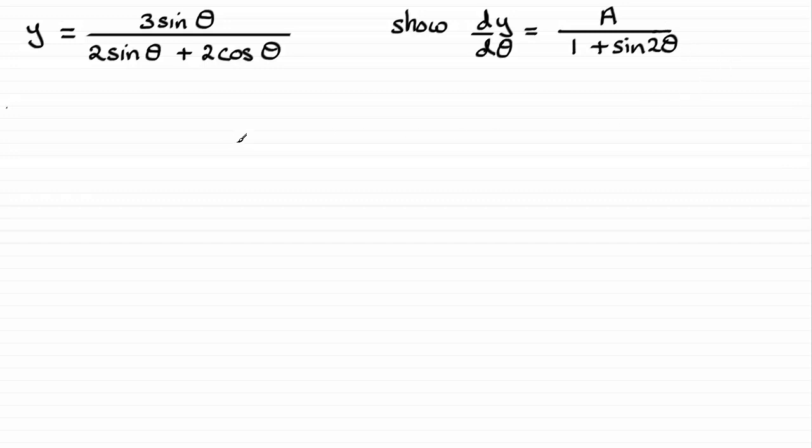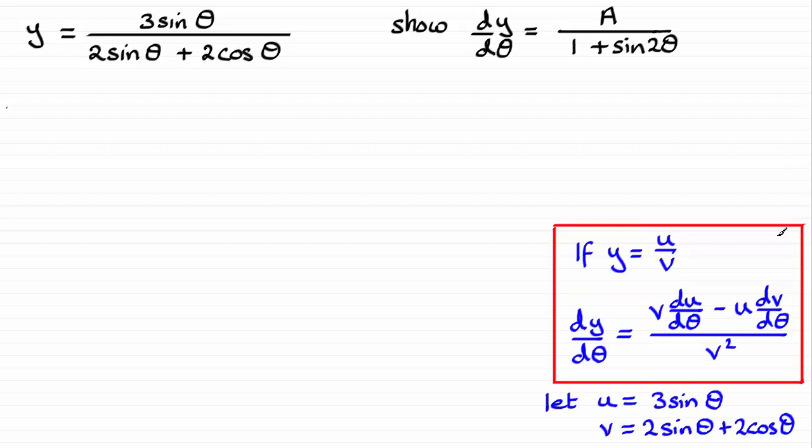So how do we do this? Well we've got to use the quotient rule. Should be familiar with this if you've been watching tutorials on my website. Briefly though, if y equals u over v, where u and v are functions of theta, dy by d theta is given by this equation here.